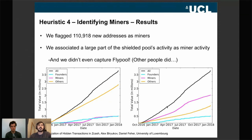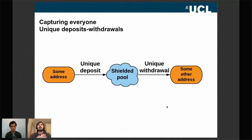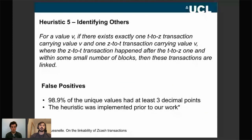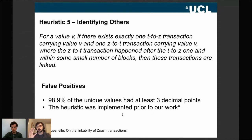The last heuristic targets everyone. If a unique deposit value never seen before appears in the pool, and a matching unique value appears on the withdrawal side a couple of blocks later, we correlate those two transactions. To argue about false positives: almost 99% of these unique values had three decimal points, indicating very high entropy. The probability of accidentally having the same value deposited and withdrawn is extremely low.